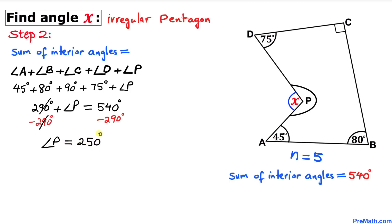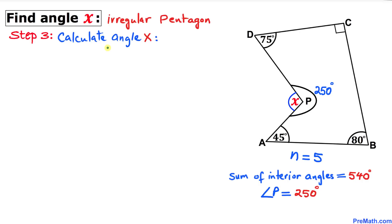Here's our final step: let's calculate angle X. We know that the whole angle is 360 degrees, which equals the sum of these two individual angles X and angle P. Therefore, angle X plus angle P equals 360 degrees. We know angle P is 250 degrees, so we can replace it.